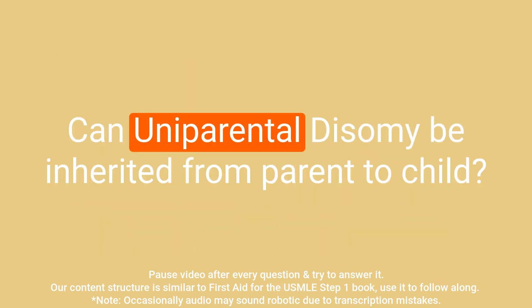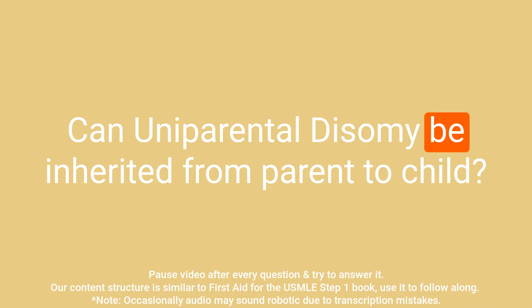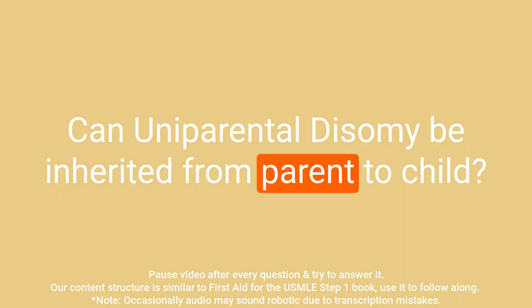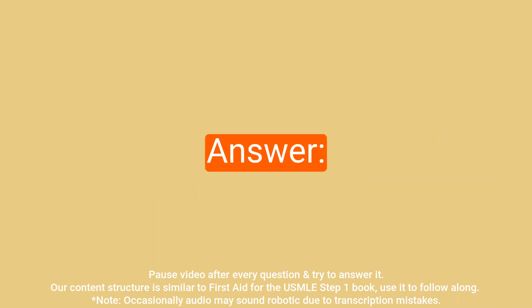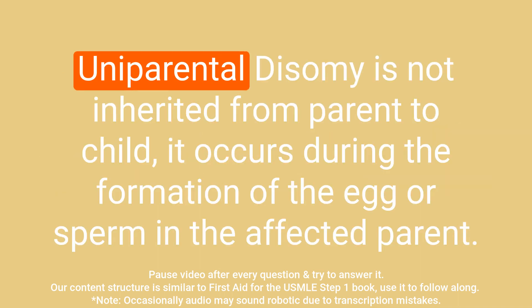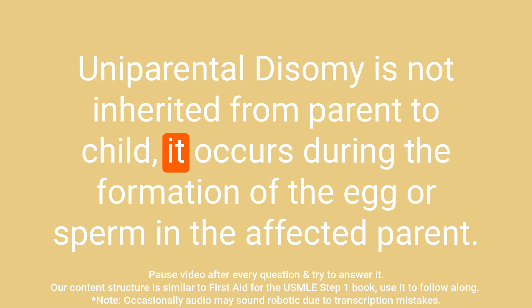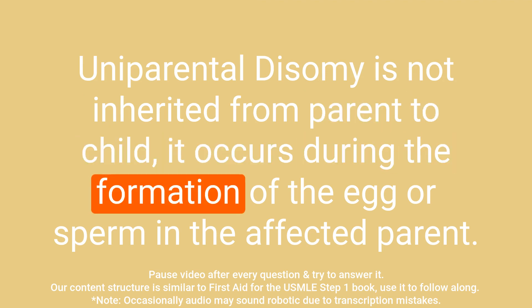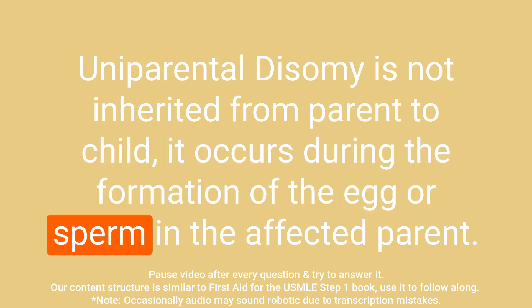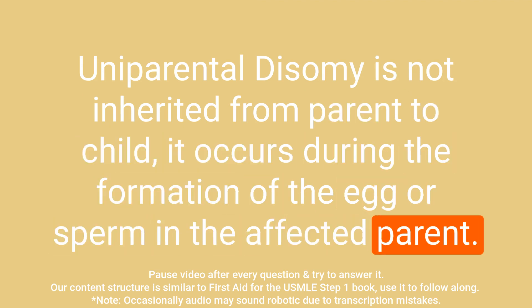Question: Can uniparental disomy be inherited from parent to child? Answer: Uniparental disomy is not inherited from parent to child. It occurs during the formation of the egg or sperm in the affected parent.